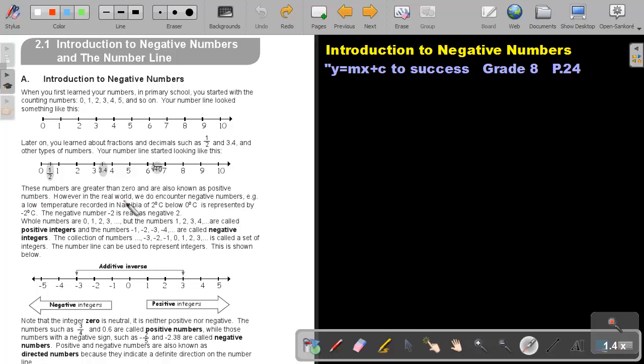However, in the real world, we do encounter negative numbers. For example, a low temperature recorded in Namibia of 2 degrees Celsius below 0 degrees Celsius is represented by negative 2 degrees Celsius. The negative number, negative 2, is read as negative 2.